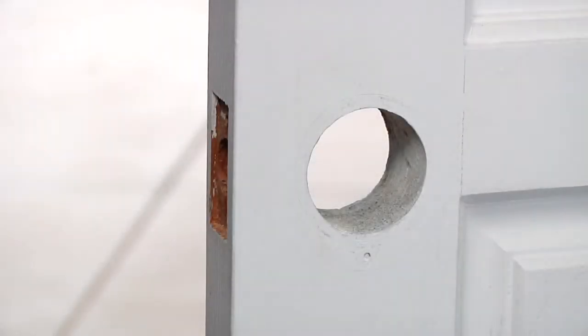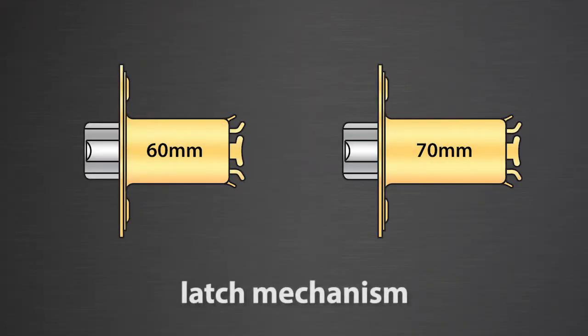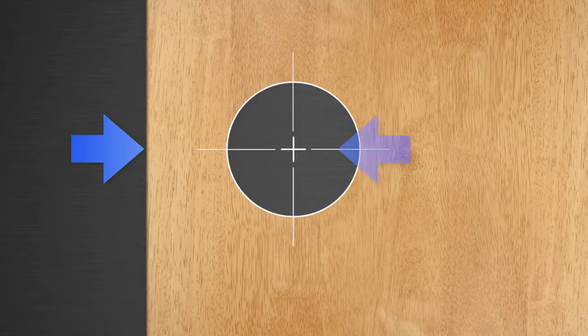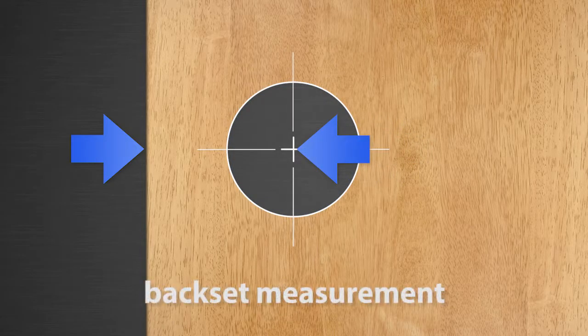After removing the existing doorknob, you'll need to select the correct latch mechanism. Measure the distance from the door edge to the center of the hole on the face of the door. This is called the backset.